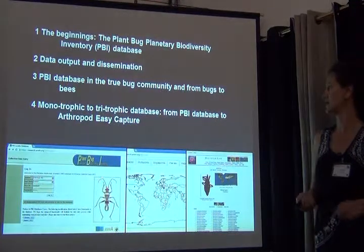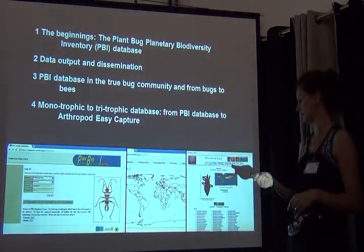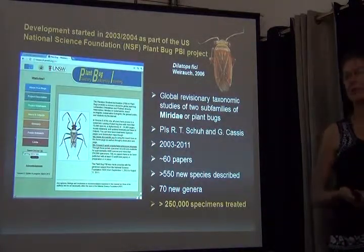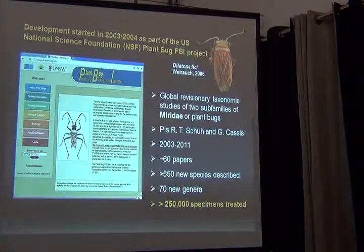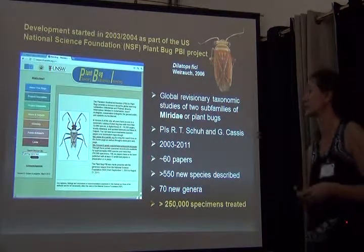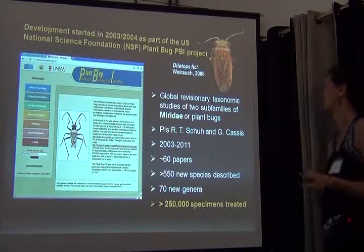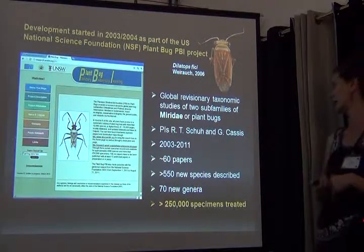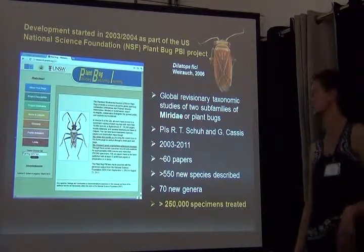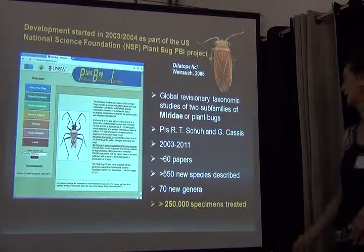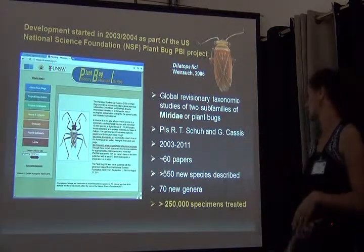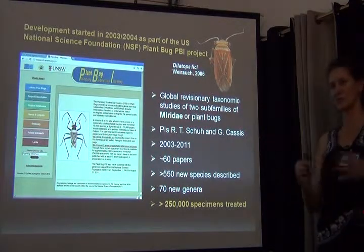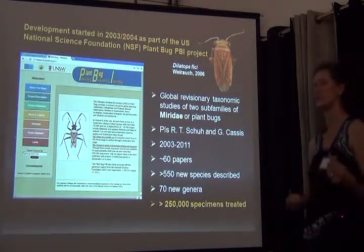I'll briefly talk about data output dissemination and then gloss over the two other topics. The database really started in 2003–2004 as part of the U.S. National Science Foundation-funded Planetary Biodiversity Inventory Project. The focus of this project is on global evolutionary taxonomy, studies of two subfamilies of Miridae, with PIs DeBruce and Jerry Cassidy. The project was only wrapped up about two and a half years ago, even though we're still working on certain revisions.